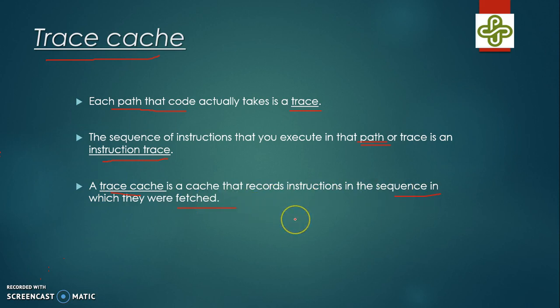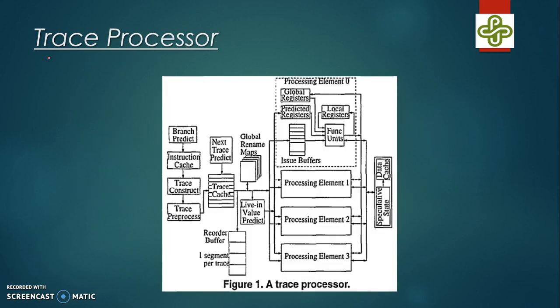Consider an example: when there is an unconditional branch, you must take the branch, so the intermediate instructions in the cache line are not useful. So why not create a cache that keeps traces — not instructions stored sequentially, but instructions in the order they were actually fetched?